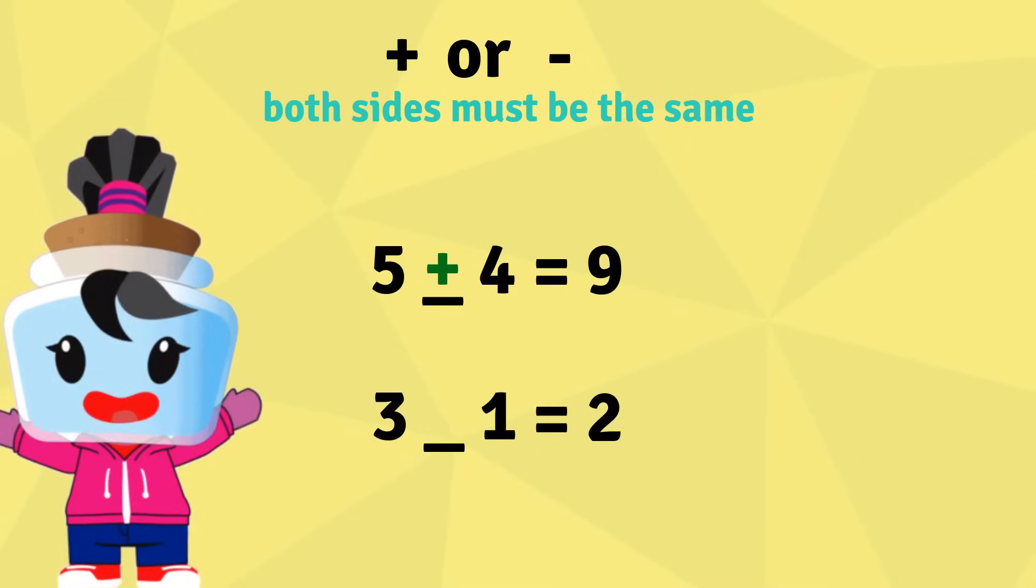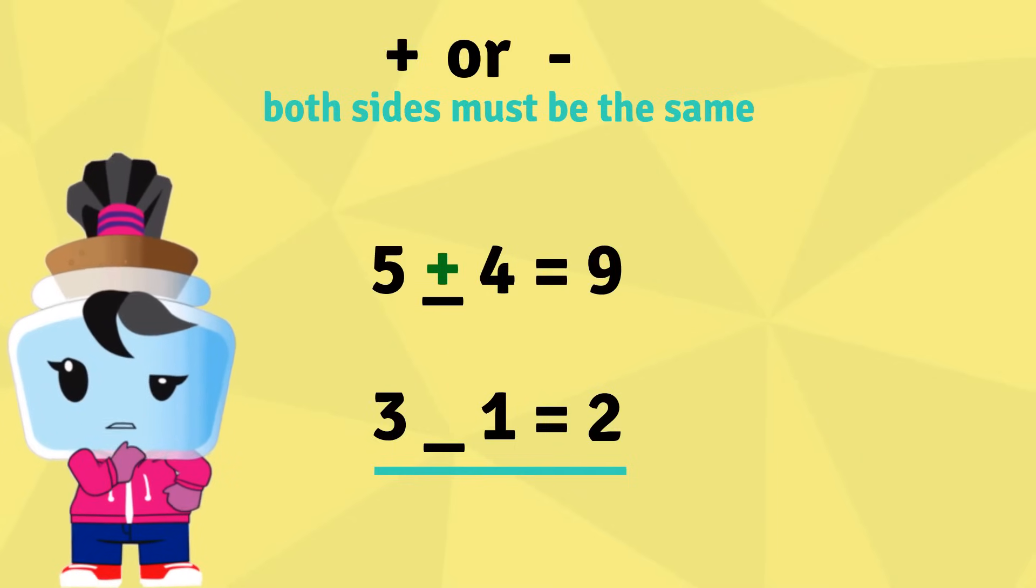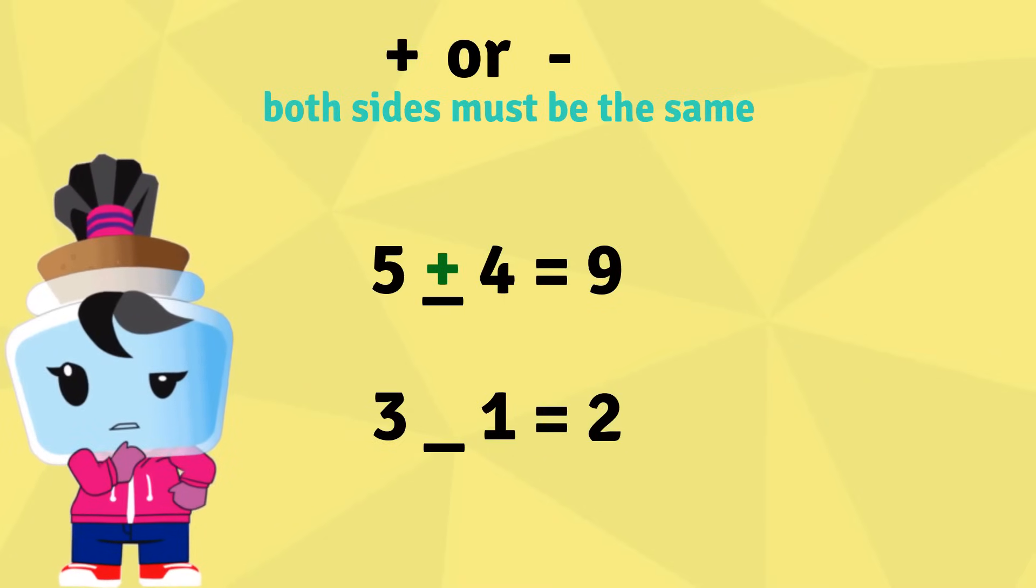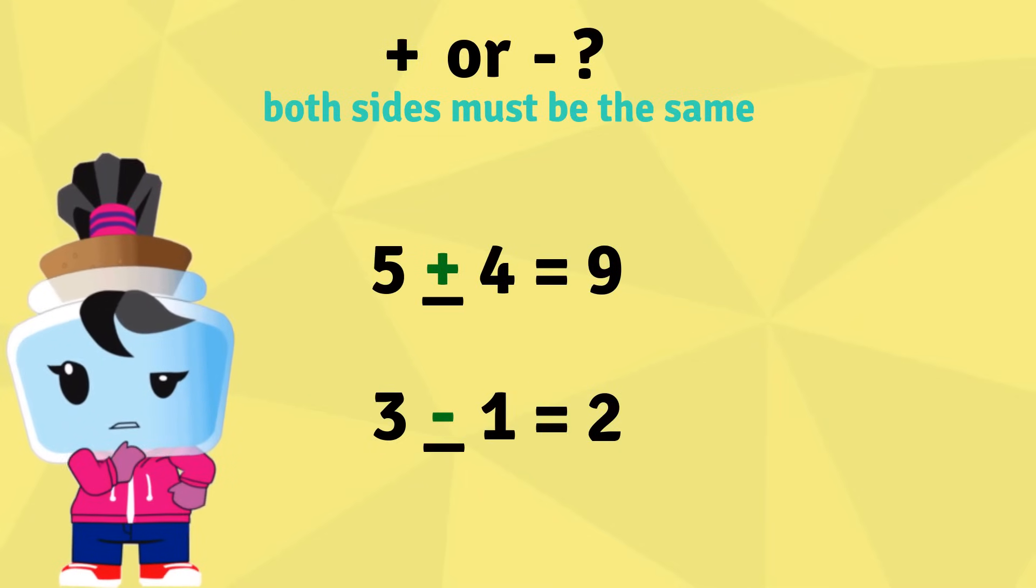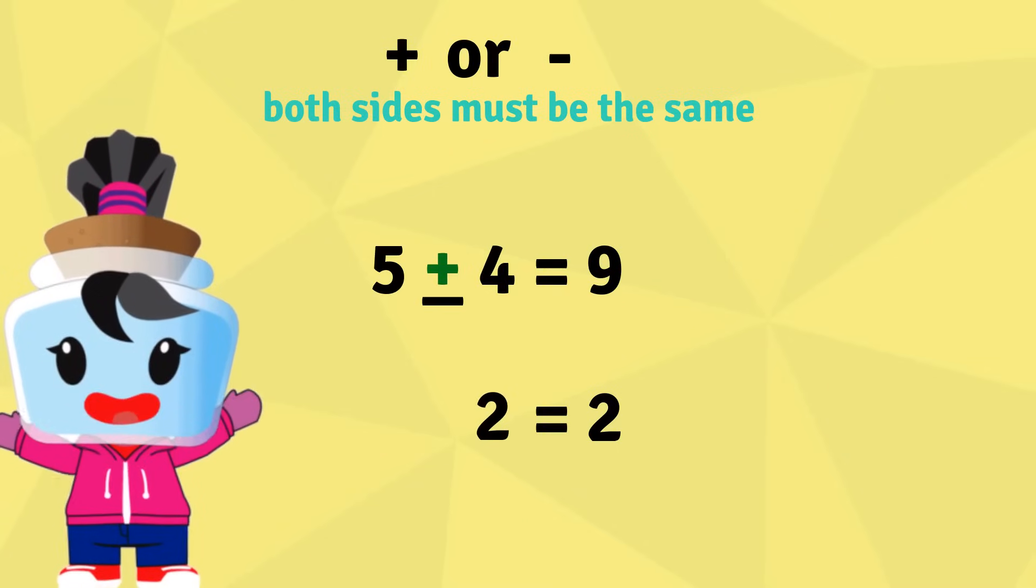How about this equation? Which math symbol will you use to fill in the blank? If we use plus, we will have 3 plus 1, which is equal to 4. That's not the same as the right side of the equal sign. If we use minus, we'll have 3 minus 1, which is equal to 2.